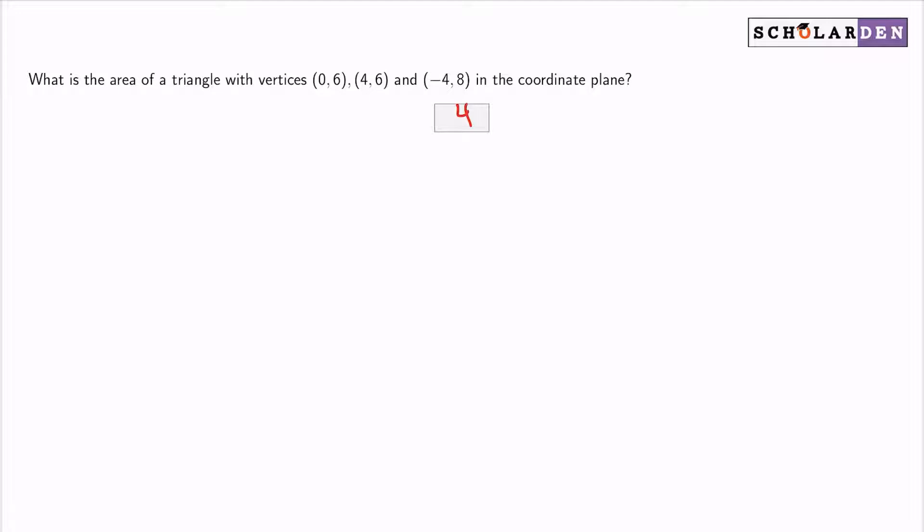To answer this question, we want to understand what's being asked. I see that we're asked for the area of a triangle. The area of a triangle is A = 1/2 × base × height. So what I'm going to need to do here is take these coordinates and figure out what the base and height are from these coordinates.